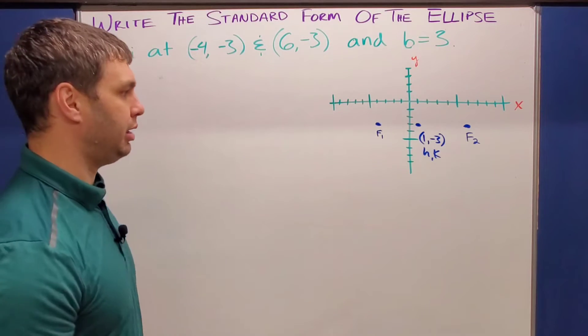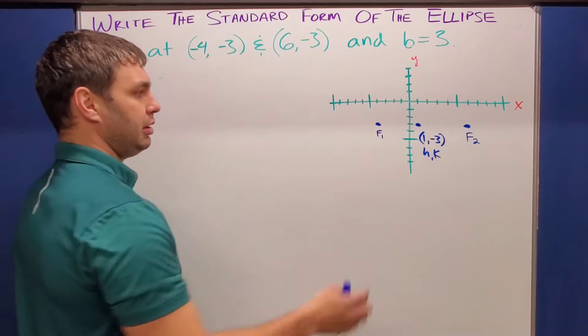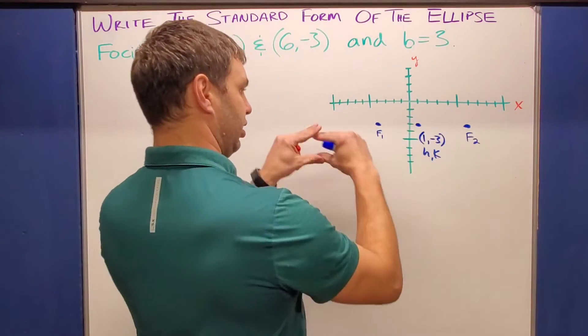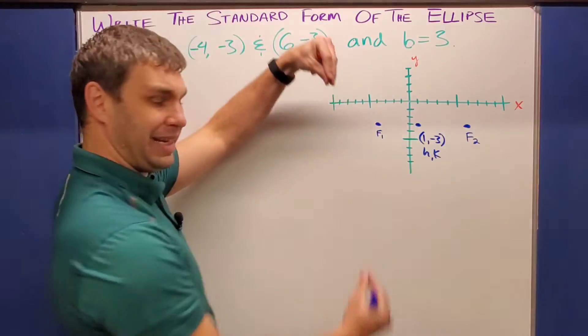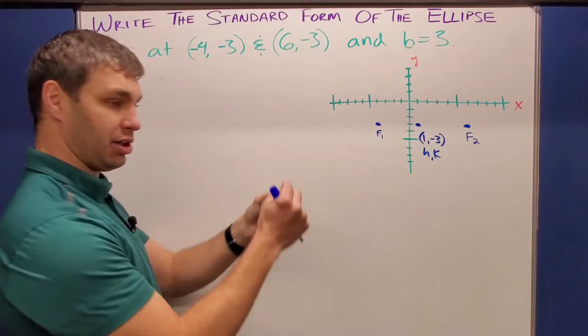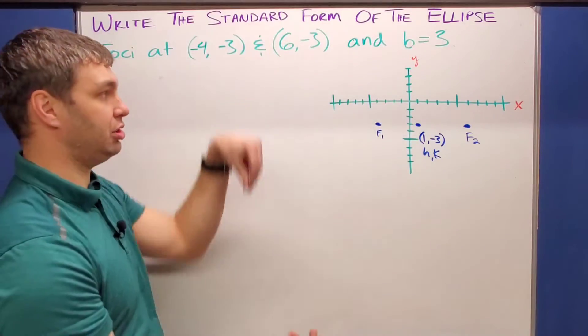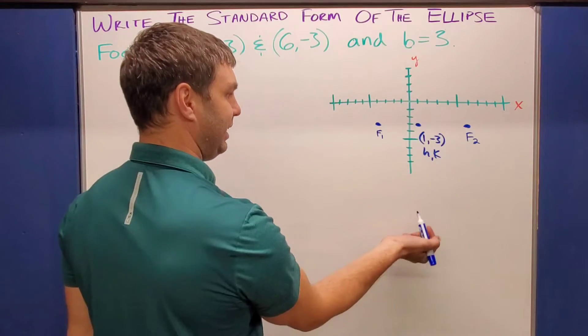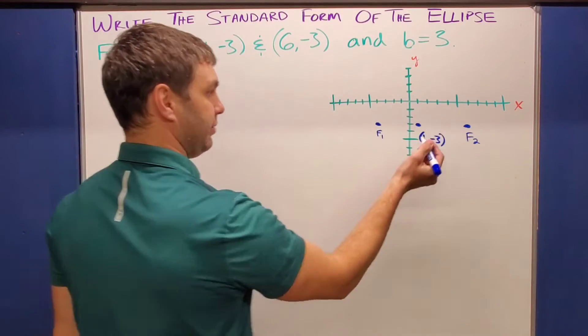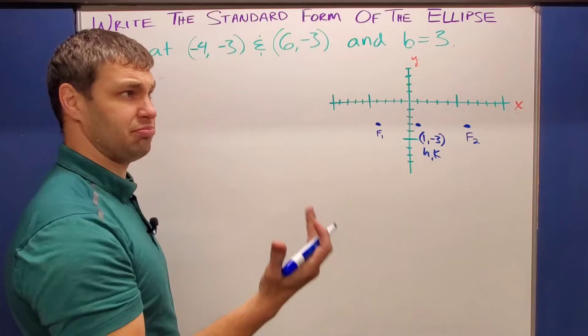When we write the standard form, in a little bit, however, just like that is along our major axis or minor axis is where our B value is. So if I go perpendicular in the Y direction, three spots up and three spots down, that's going to be my minor axis vertices.